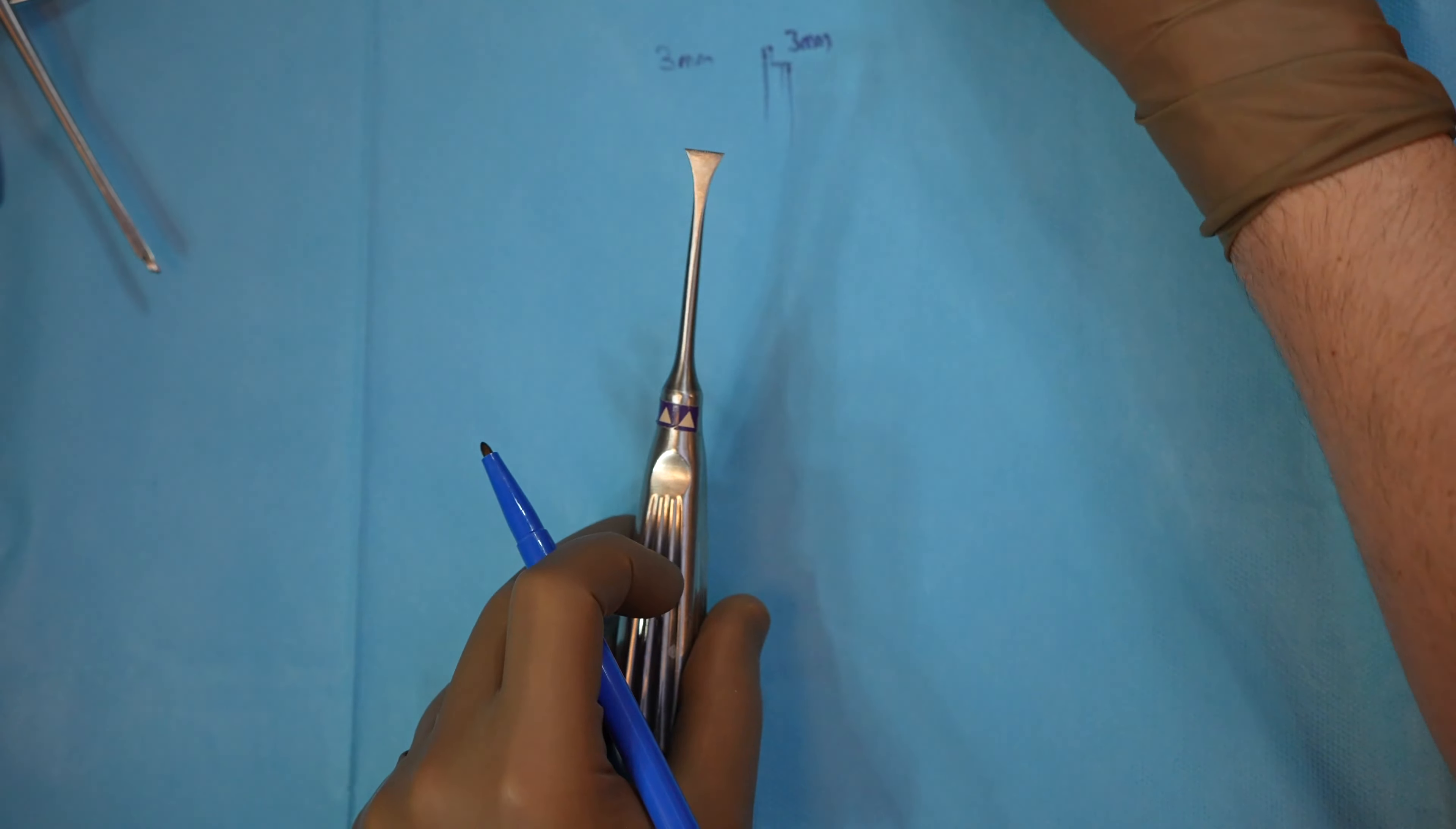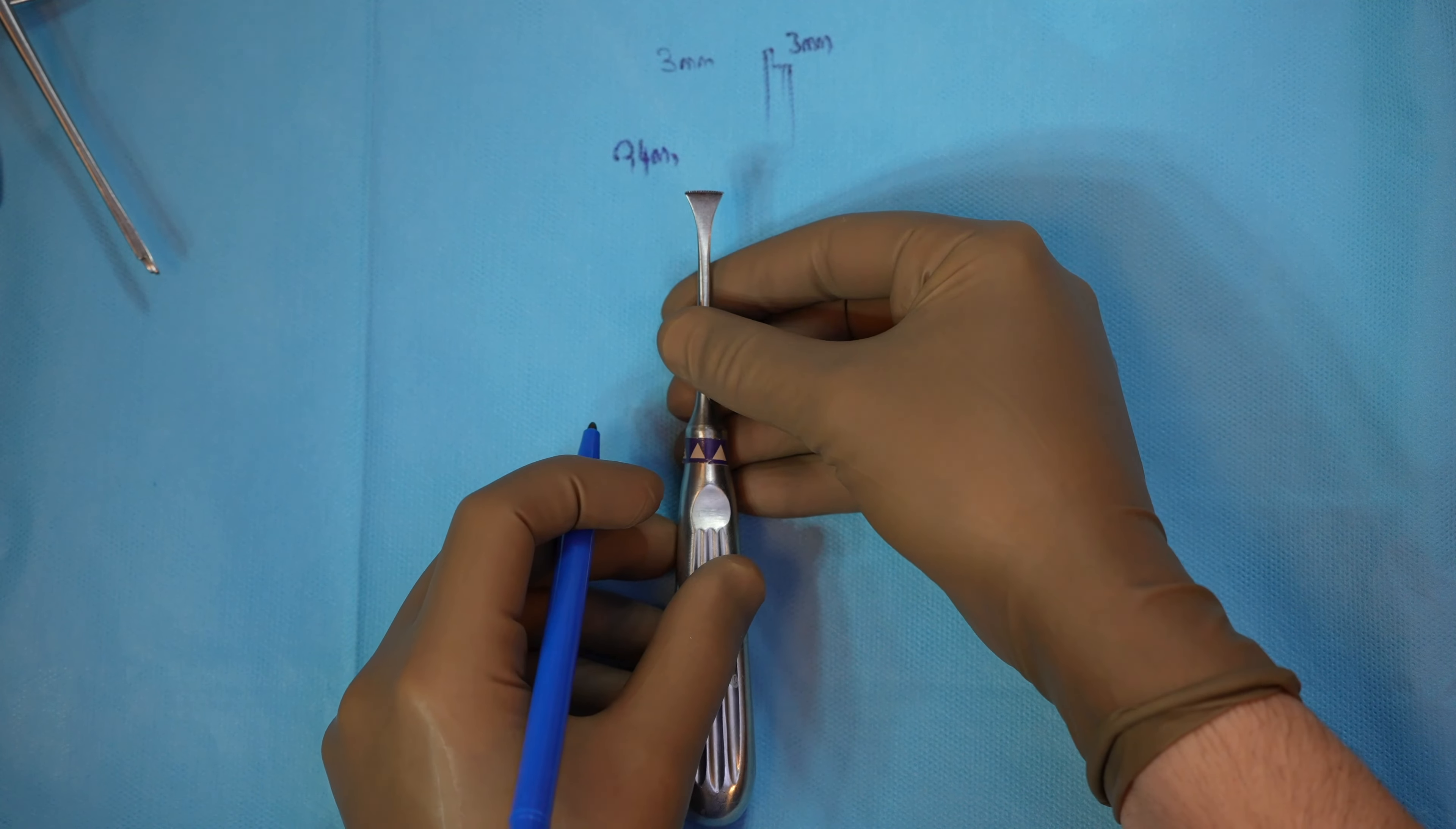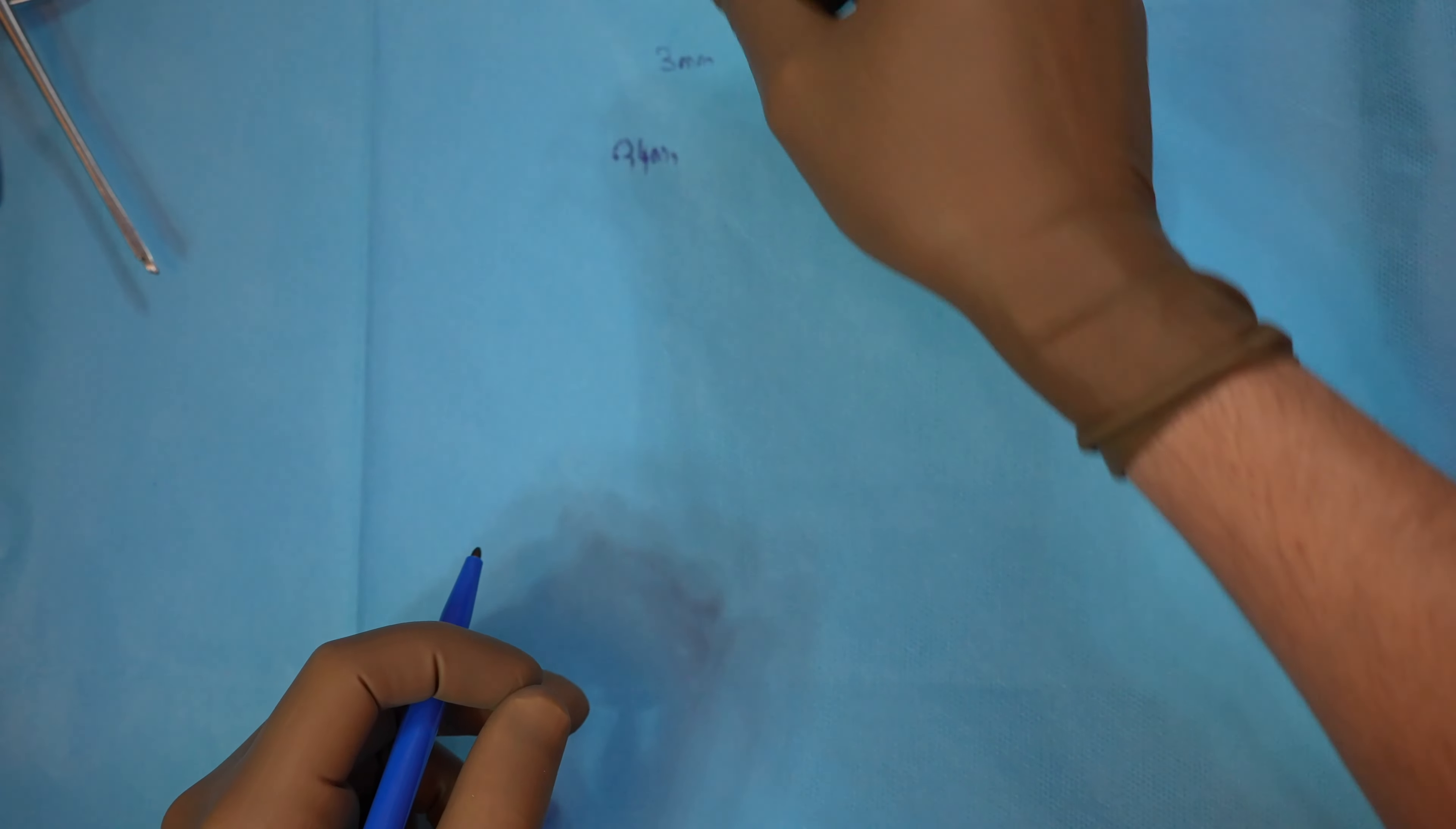This is Tashtan convex saw, 0.4mm, thinner than piezo. If I dissect everything on the bone, I use this for transverse osteotomy.